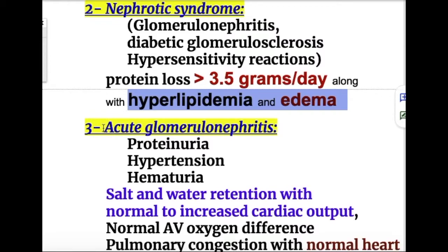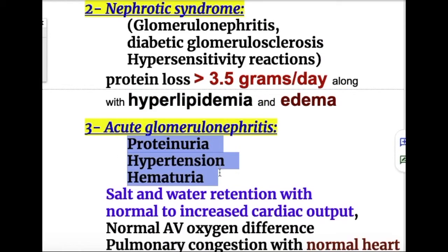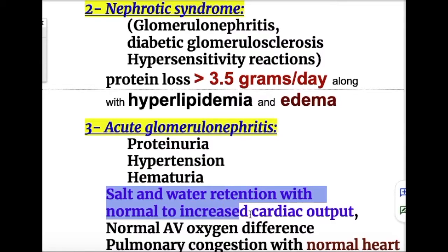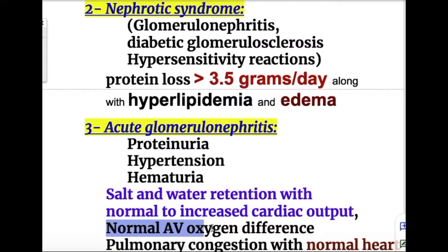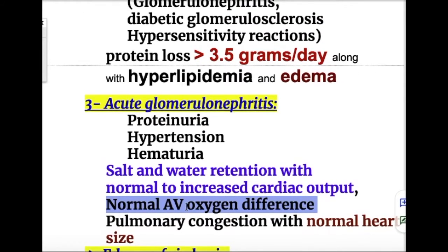Condition number three is acute glomerulonephritis, presenting with proteinuria, hypertension, and hematuria. There is salt and water retention with normal to increased cardiac output. Differences from CCF include: normal arteriovenous oxygen difference, and pulmonary congestion with normal heart size — whereas heart size increases in congestive cardiac failure.